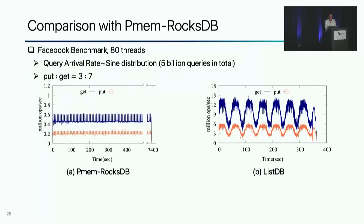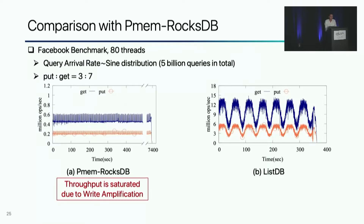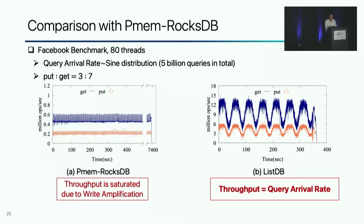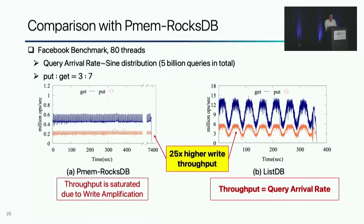Finally, we compare ListDB with RocksDB that Intel developed for persistent memory. In the Facebook benchmark, query arrival rate follows a sine distribution. But PMEM RocksDB shows saturated throughput due to write amplification. The peak throughput of ListDB is higher than the query arrival rate of this workload, so the throughput is similar to the query arrival rate. As a result, ListDB shows 25 times higher write throughput than PMEM RocksDB.